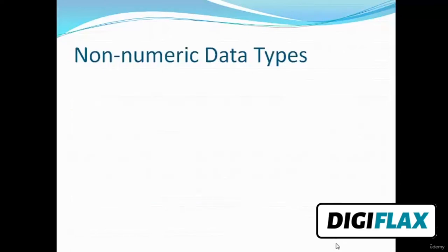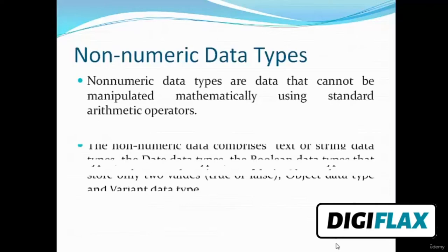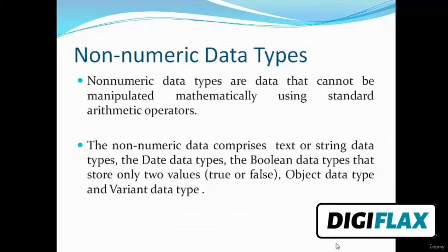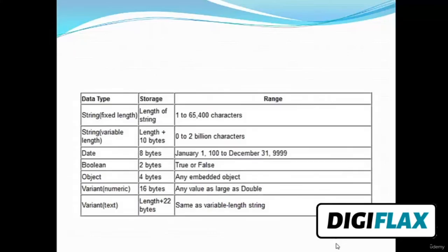Now let's see non-numeric data types. Non-numeric data types are data that cannot be manipulated mathematically using standard arithmetic operators. They comprise String (text), Date, Boolean (stores only True or False), Object, and Variant data types. String stores text values, Date stores date values, Boolean stores only True or False, Object is the highest-level data type which can store any data type, and Variant is similar to Object but stores numeric values or text.